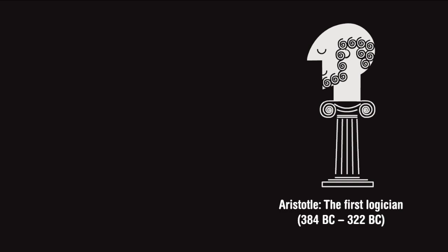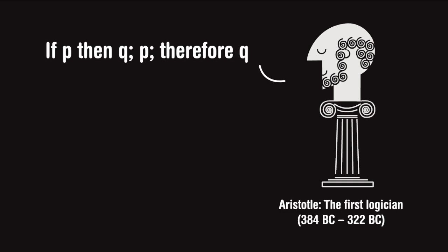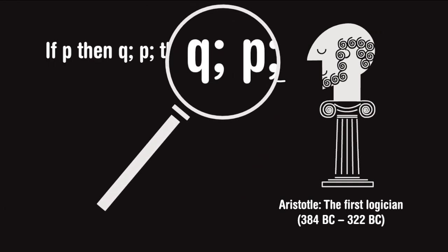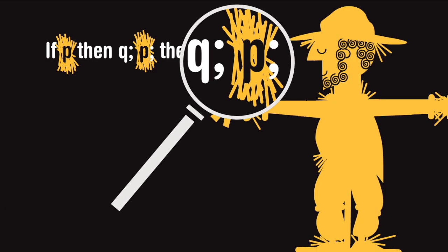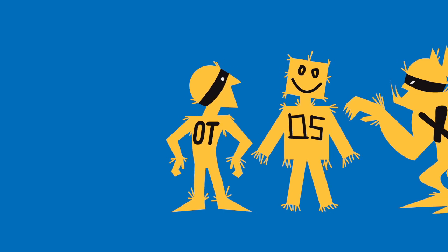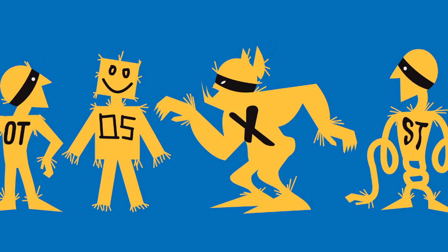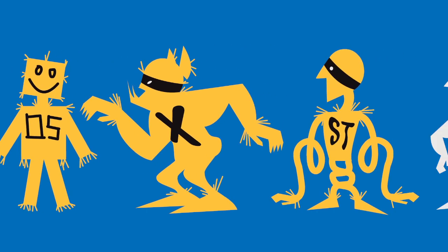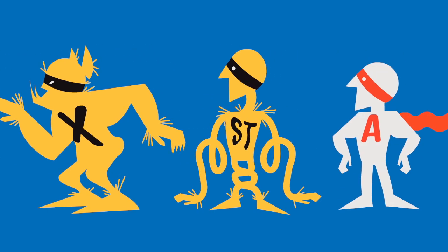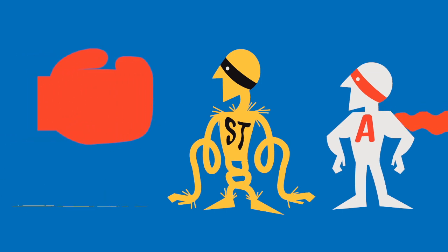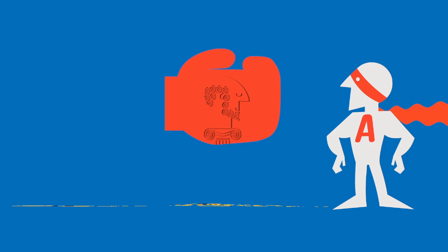Logic is built up from ideas called premises. Even if they seem logical, it's important to pay attention to those premises to make sure that they're not made of straw. Strawman arguments are off-topic, oversimplified, exaggerated or subtly twisted versions of your argument that others can easily knock over while still appearing logical.